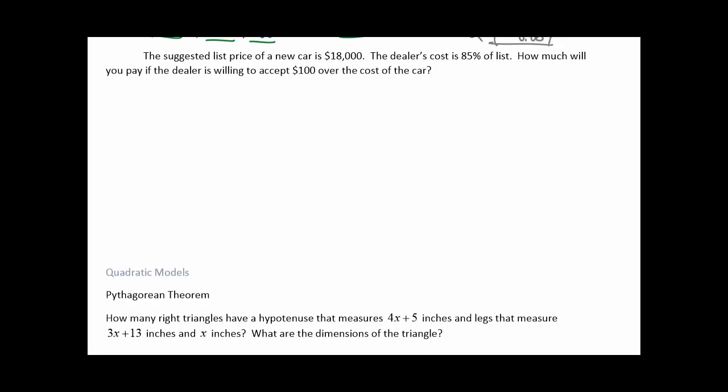Alright. The suggested list price of a new car is $18,000. The dealer's cost is 85% of list. How much will you pay if the dealer's willing to accept $100 over the cost of the car?